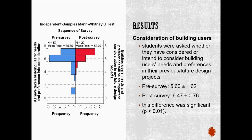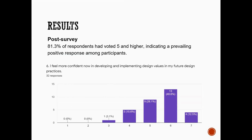In another question, students were asked whether they have considered or intend to consider building users' needs and preferences in their design projects. The results showed that the mean score in the post-survey was significantly higher than in the pre-survey, indicating that students developed a stronger tendency to consider building users' needs. The post-survey also asked whether students feel more confident in developing and implementing design values, and 81% of respondents voted five and higher, indicating a prevailing positive response.